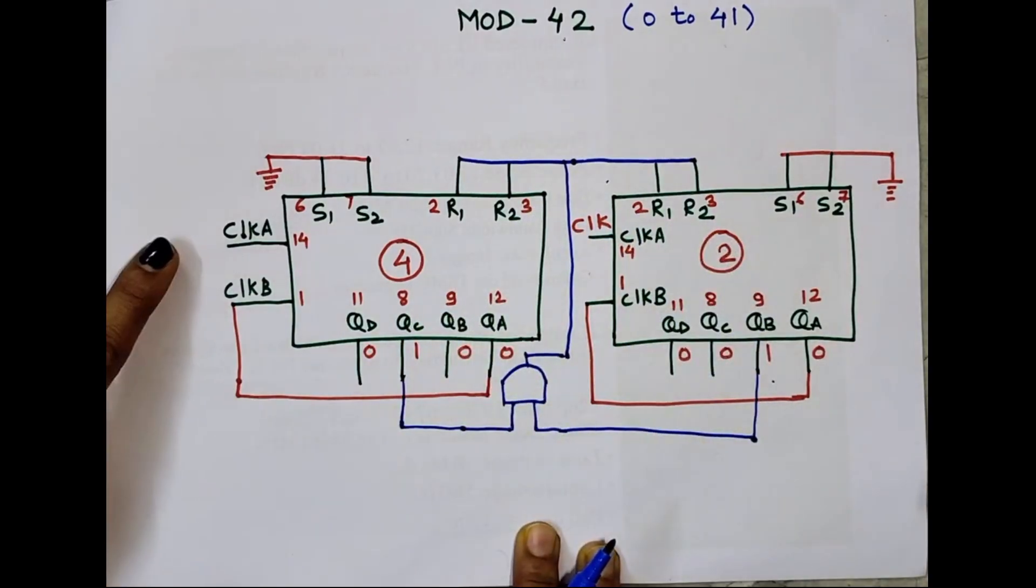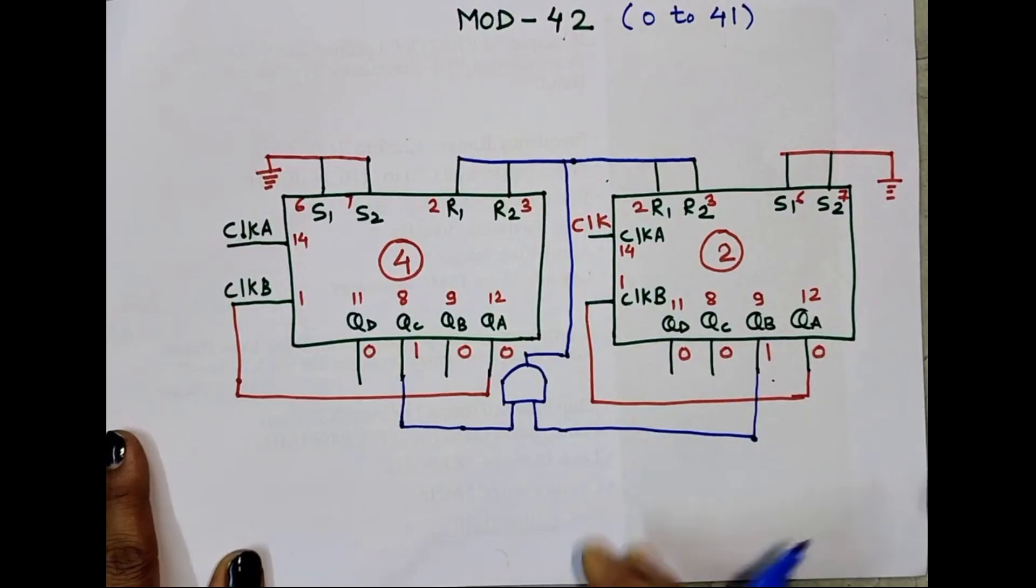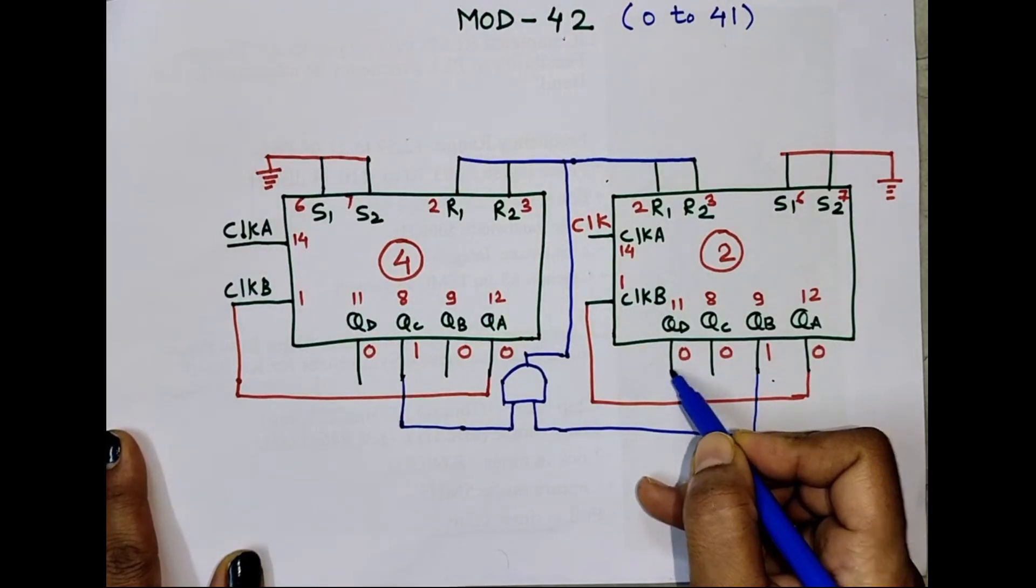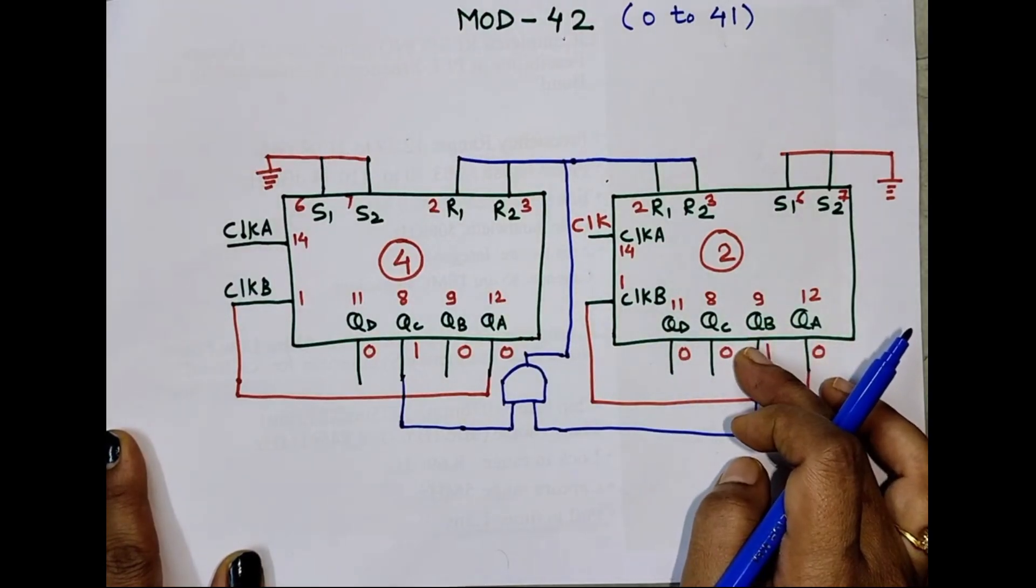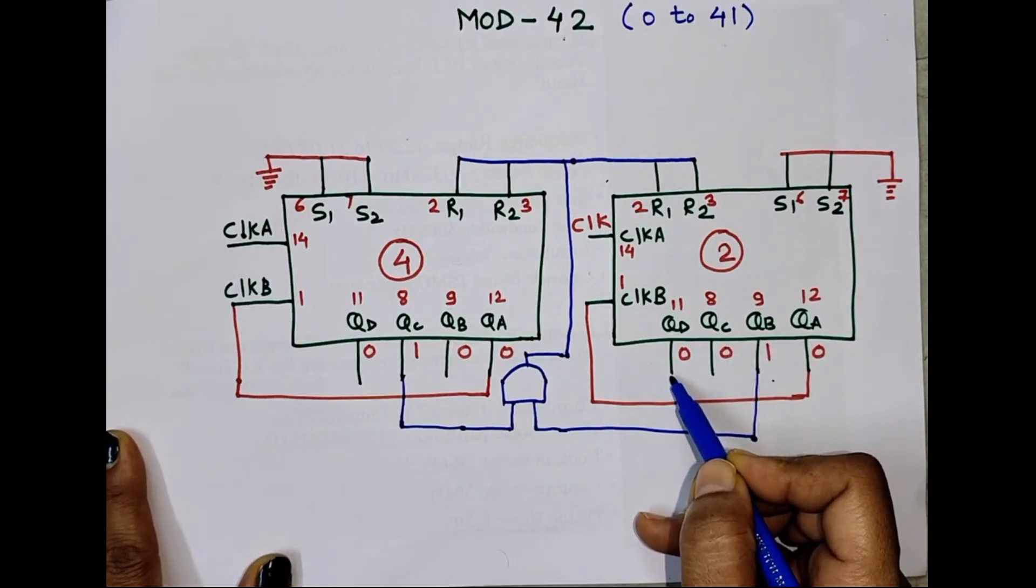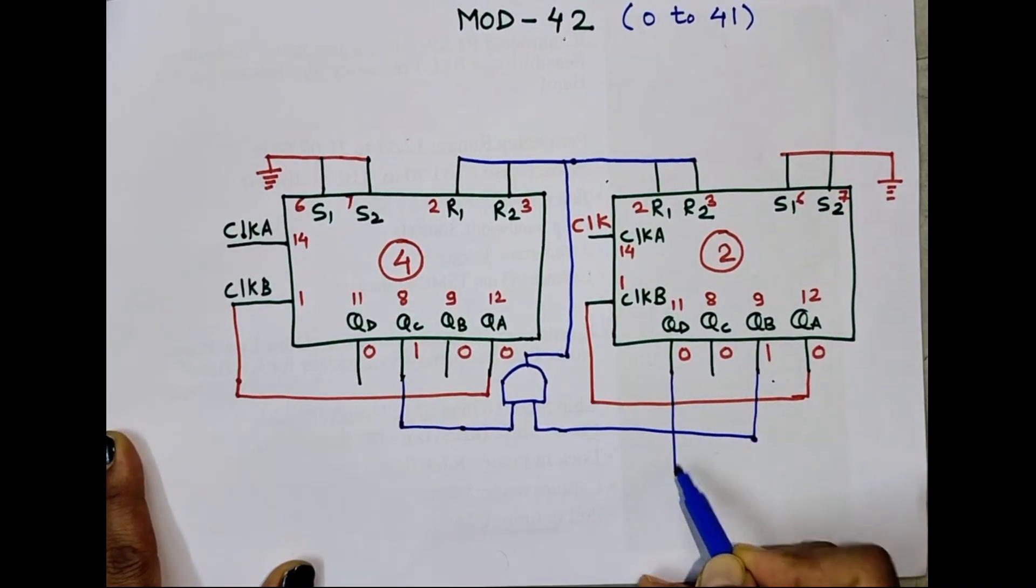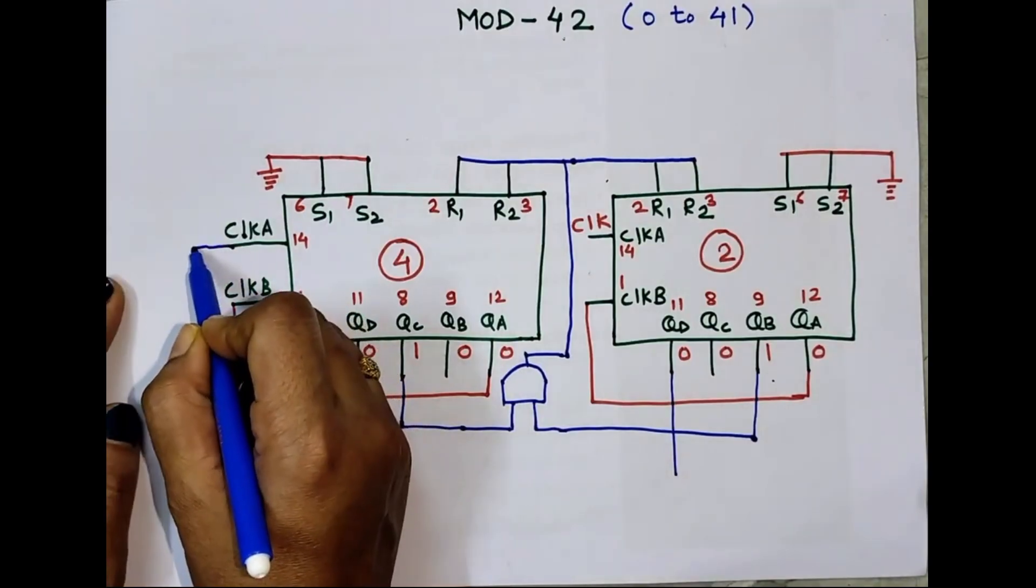But then what about Clock A? This entire circuitry is again ripple counter. So last output of first IC, this is my first IC which is used to display least significant bit, so last output is QD. MSB, its MSB is QD. So this QD will get connected to Clock A.